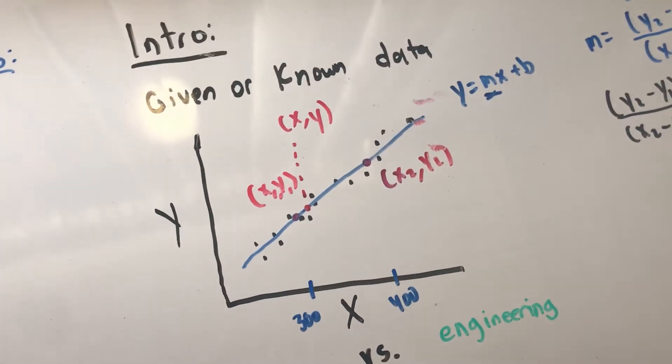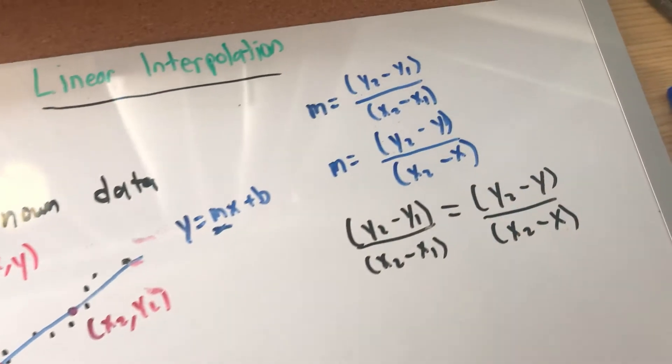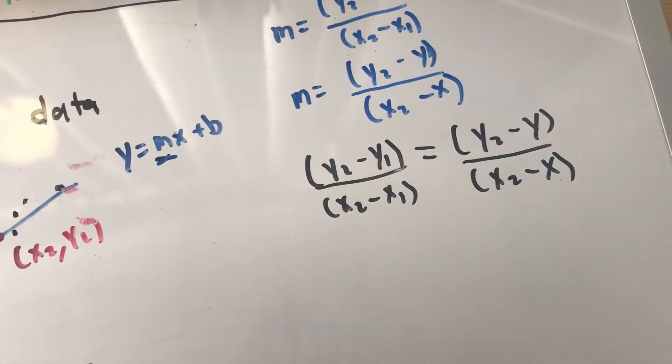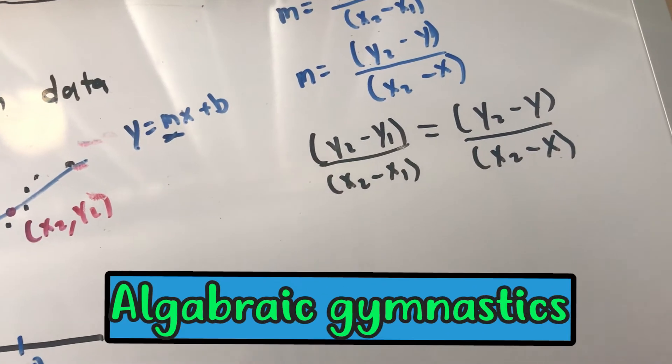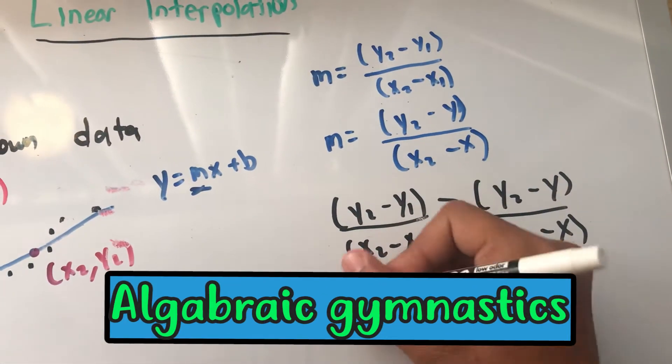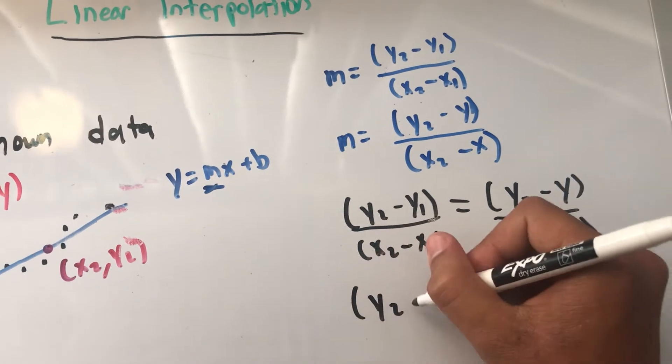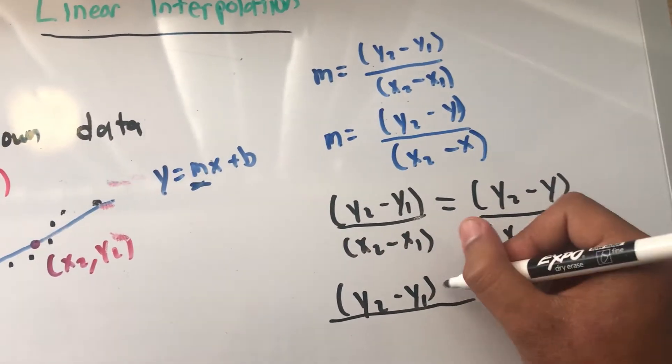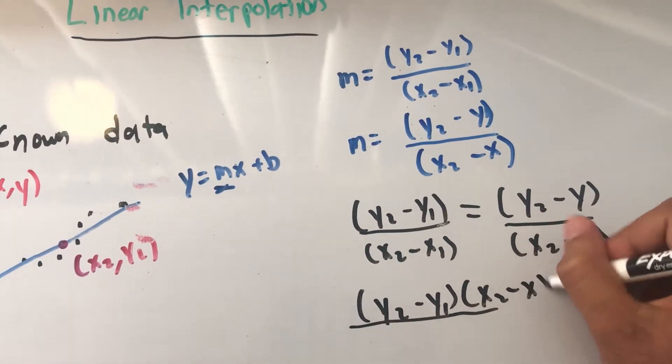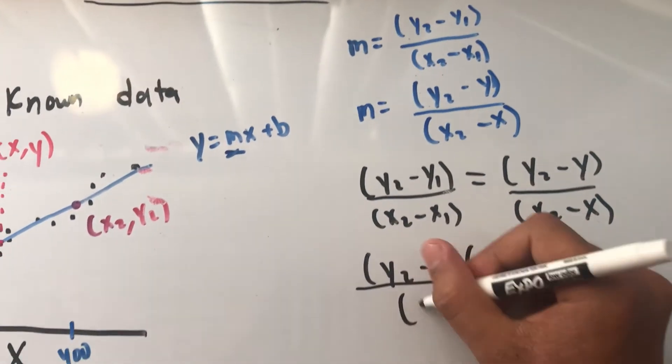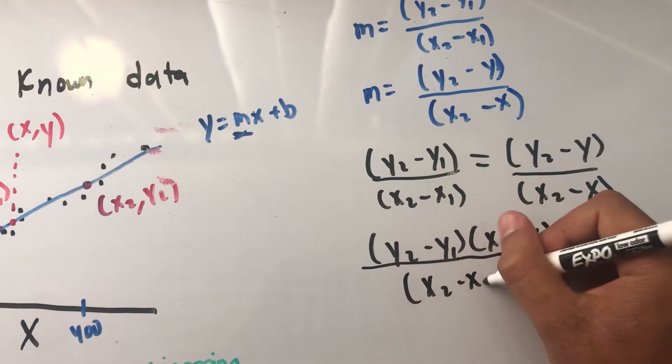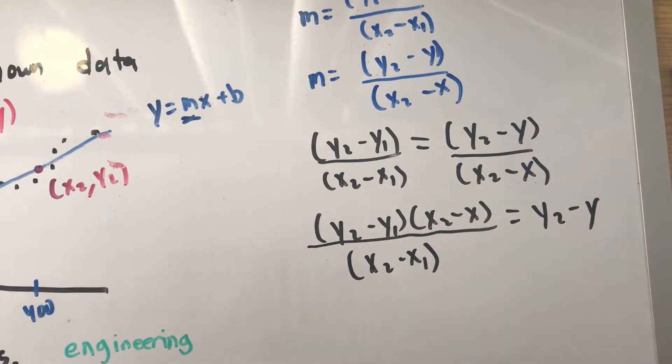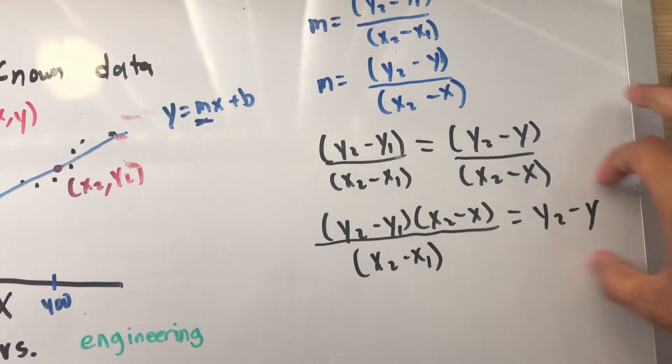Doing what one of my professors calls mathematics gymnastics or something like that, I'm going to multiply. So y2 minus y1 over, multiply that x2 minus x over x2 minus x1, which is equal to y2 minus y.